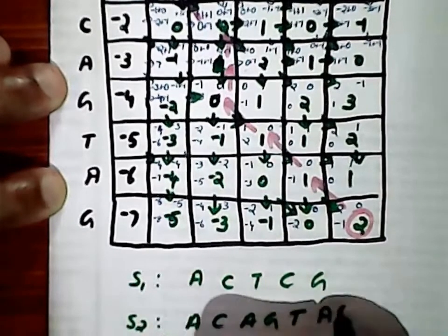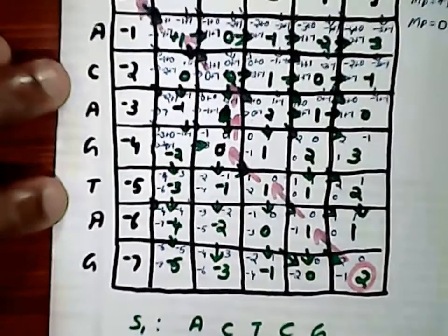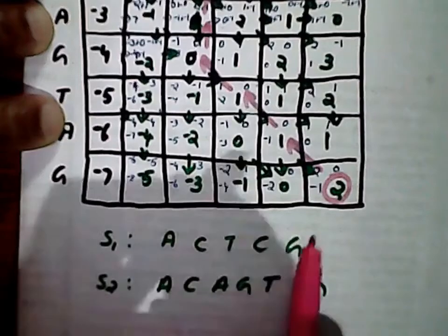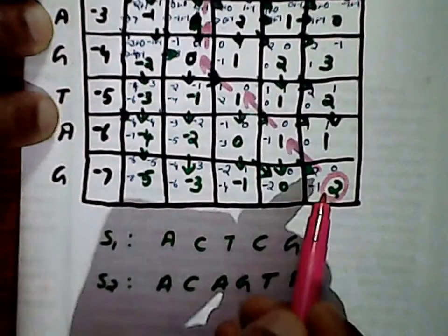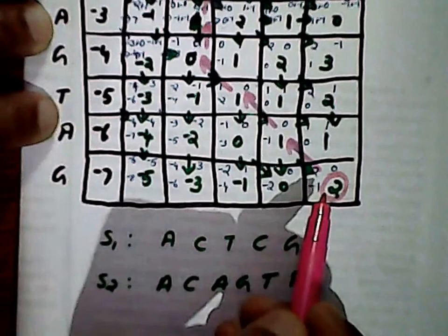To convert a path to an alignment, we first write both sequences. We consider the diagonal, vertical, or horizontal arrow marks for alignment determination. We reconstruct the alignment backwards from right to left. The value in the last row and last column of this table is two, so the best alignment score for these two sequences is two.